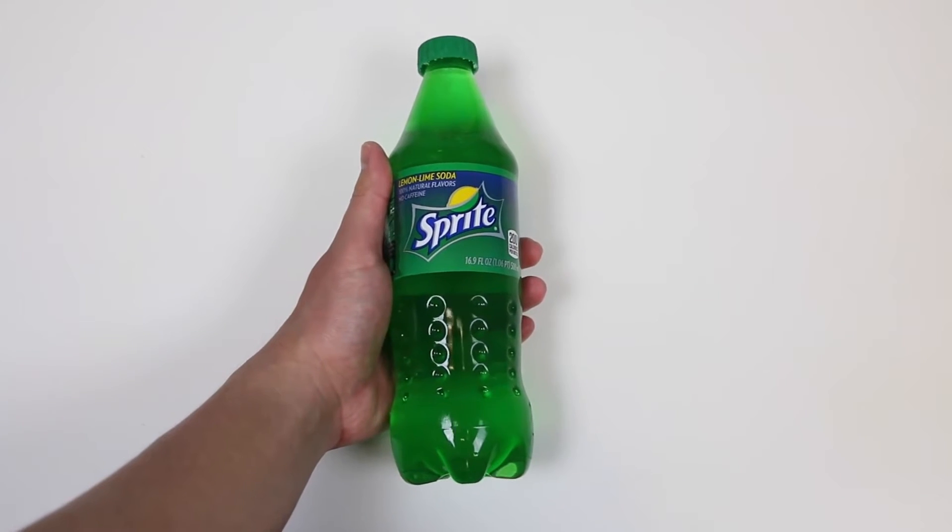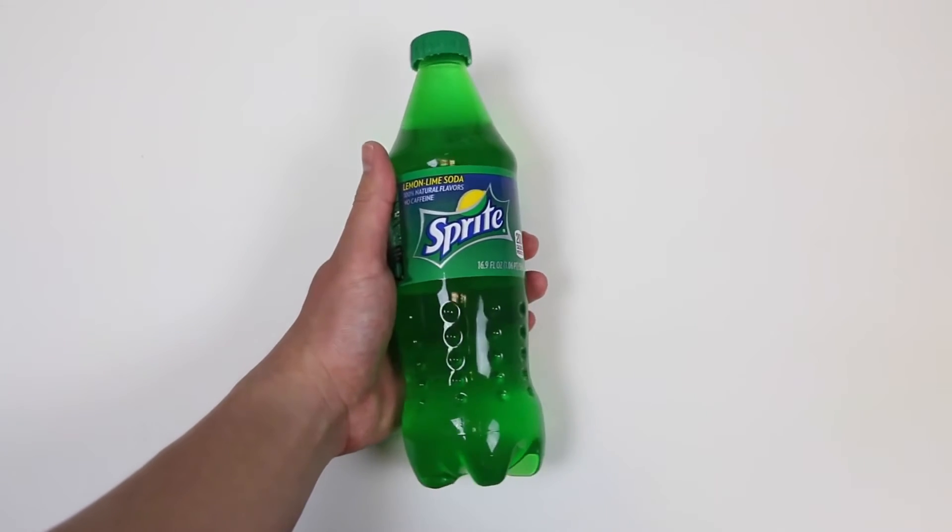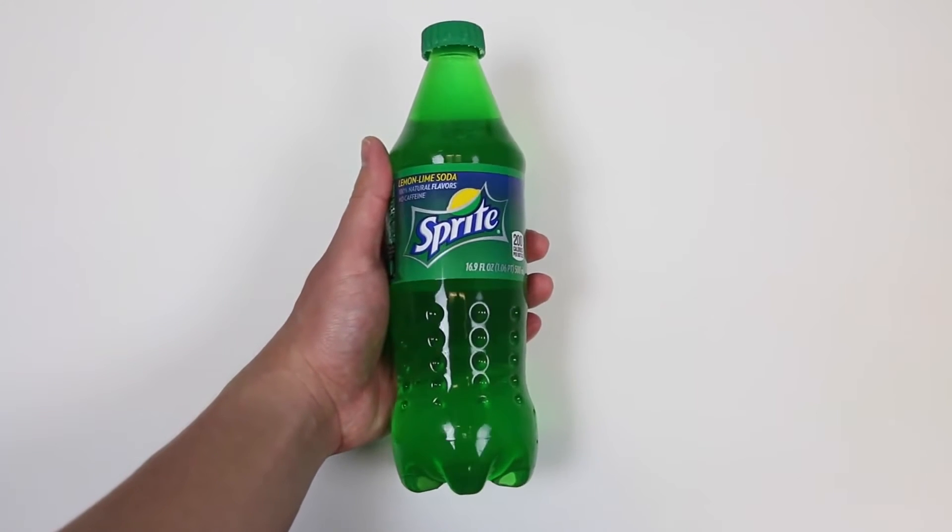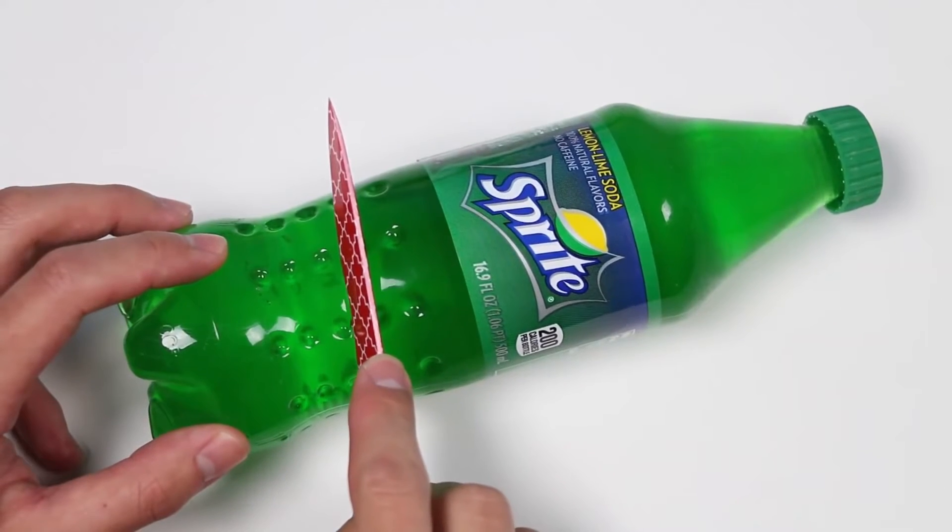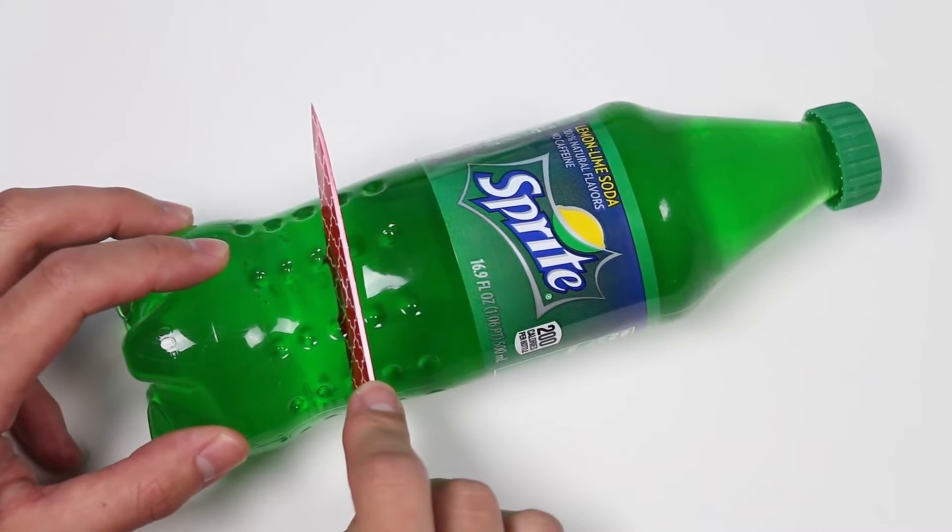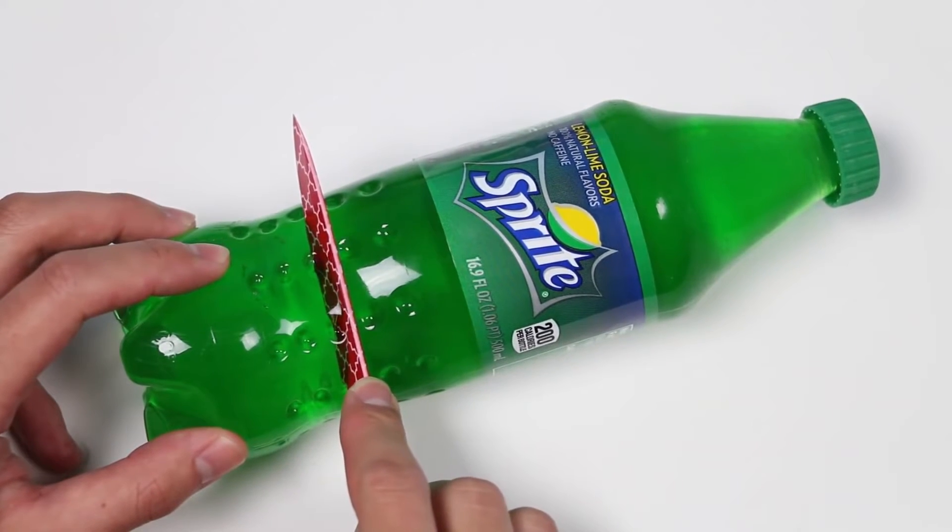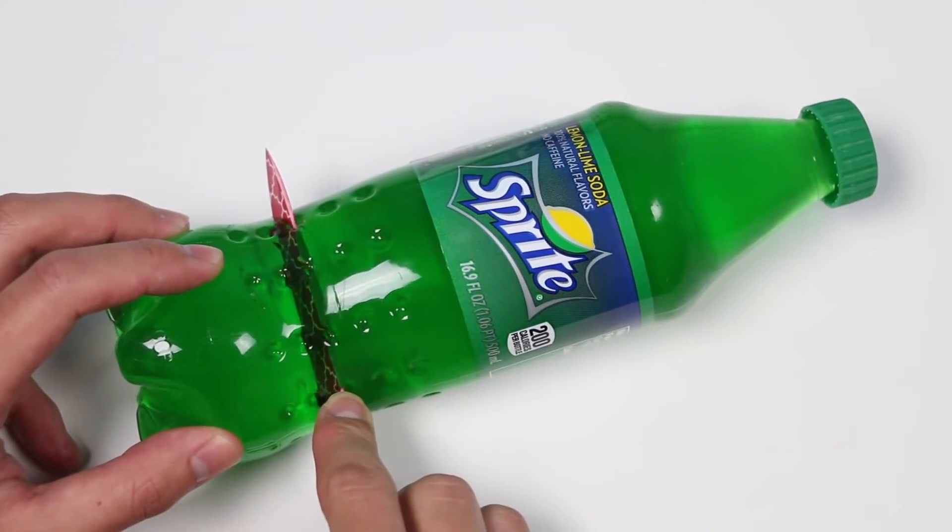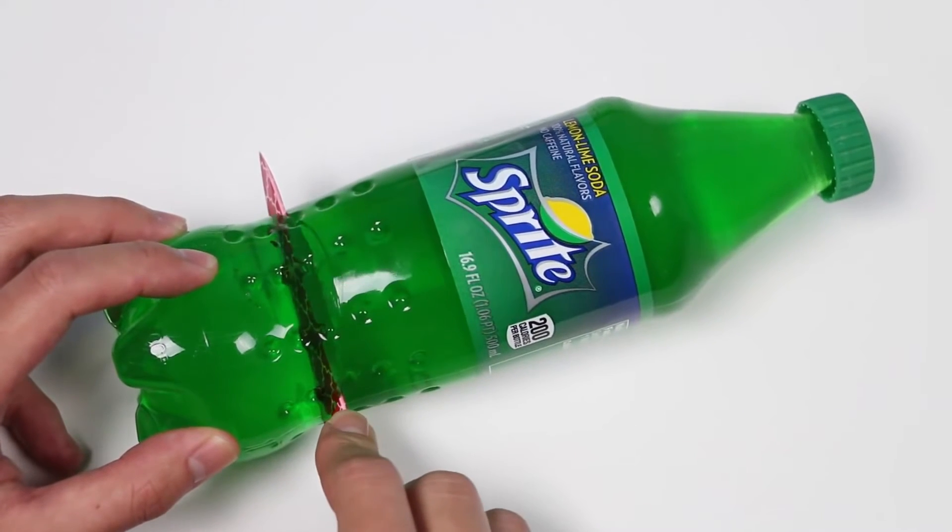And if you just show this to someone else, I guarantee you someone's gonna say, that's just a Sprite bottle! What's so interesting about this? But they don't know it's made out of jello! You know what would also be a pretty funny trick? If you told people that you could easily cut through a soda bottle with a knife! And then when you start doing this, they'll probably freak out! Until they realize that it's made out of jello!